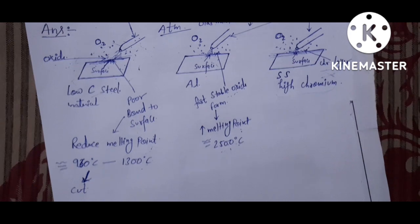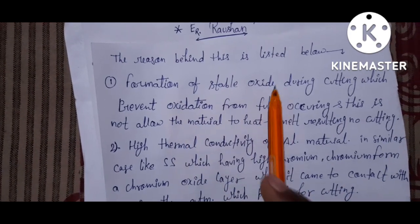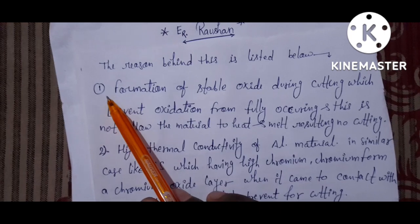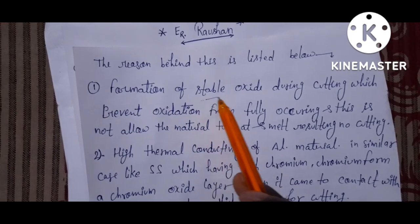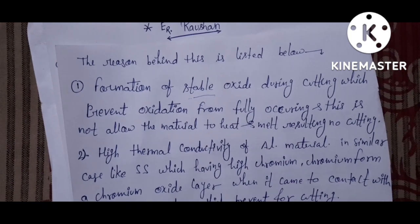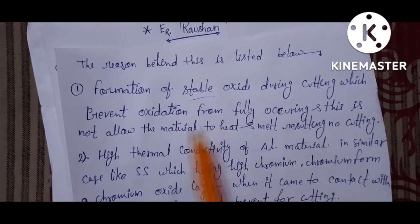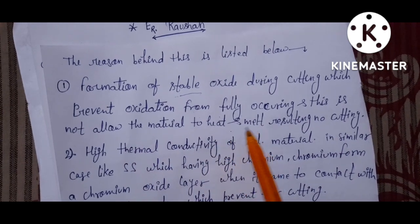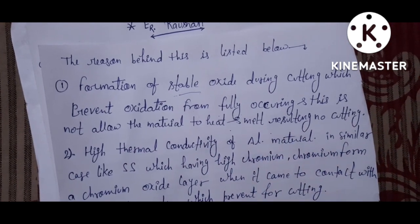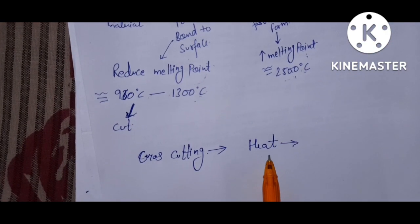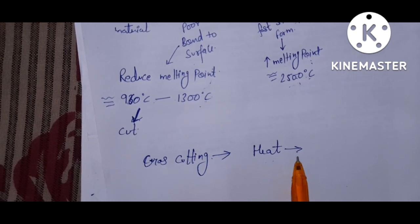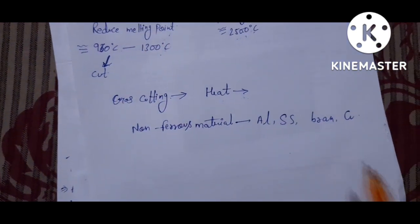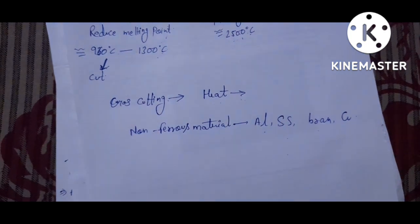So in conclusion, we list the reasons why some materials cannot be cut by oxyacetylene gas cutter. The first reason is the formation of a stable oxide — in the case of aluminium, a stable oxide forms during cutting which prevents full oxidation from occurring. This does not allow the material to heat and melt, resulting in no cutting. Gas cutting is a process in which the material is first heated and then cut.